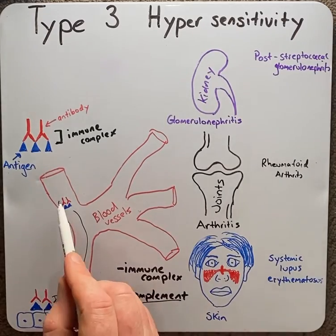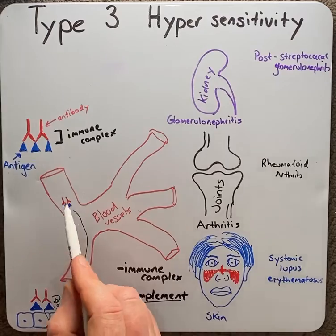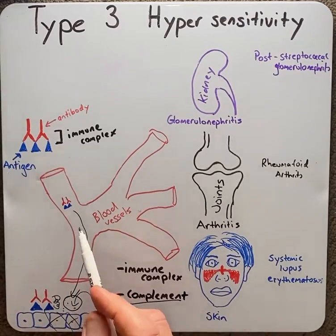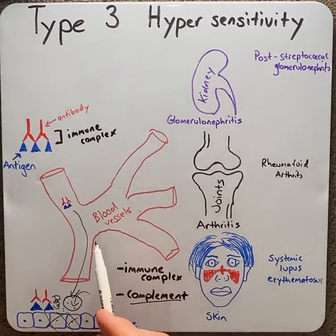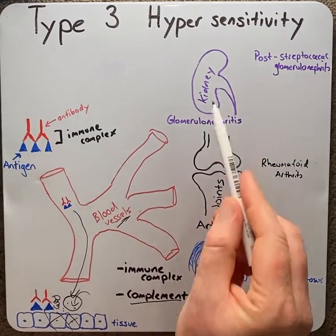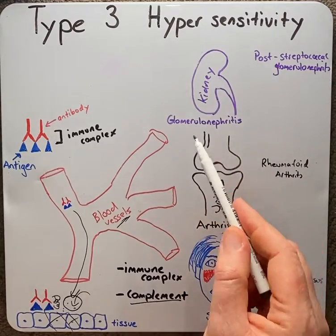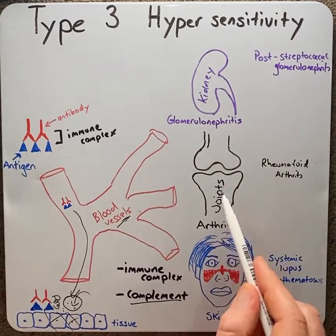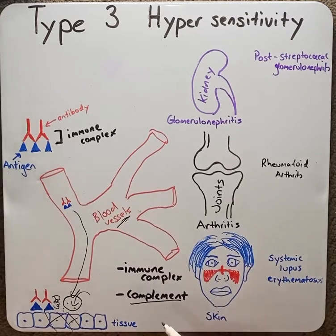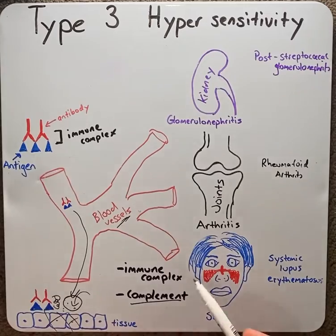Once the immune complex has formed in the circulation, the common locations where they will deposit are at blood vessels, which will lead to vasculitis; in kidneys, which leads to nephritis; at joints, which causes arthritis; in skin, causing dermatitis; or in the lungs, where we call it pneumonitis.